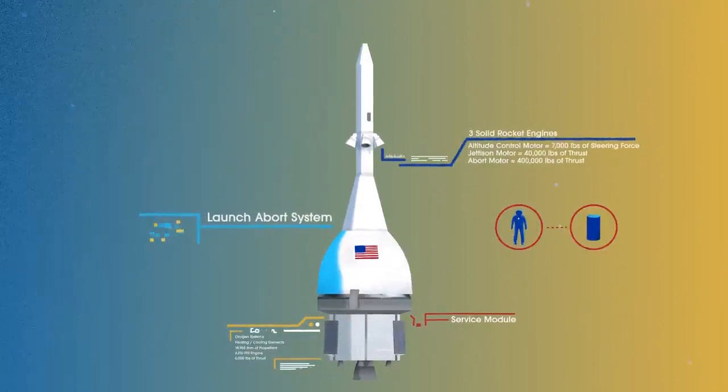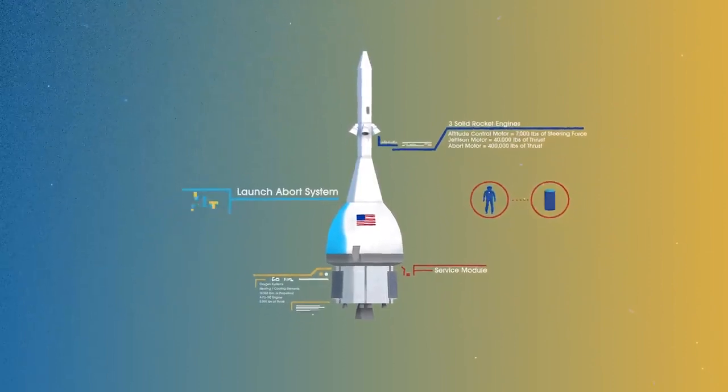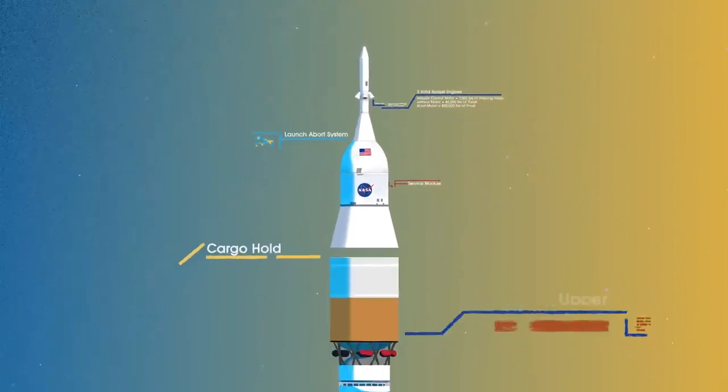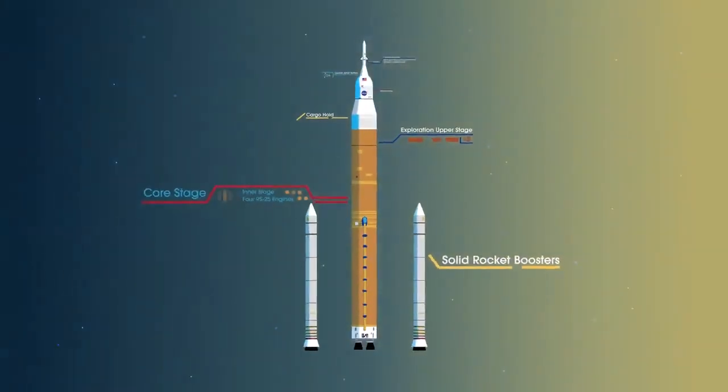To accomplish the task of launching our crew and heavy payloads, NASA is building the Space Launch System, comprising of a cargo hold, an exploration upper stage, a massive core stage, and two extended solid rocket boosters.